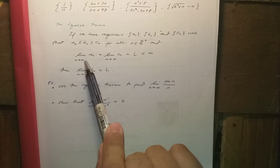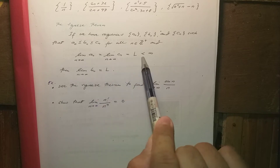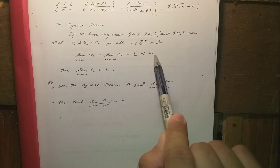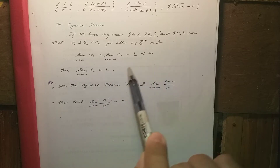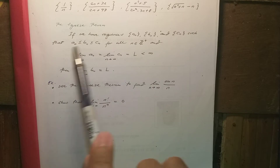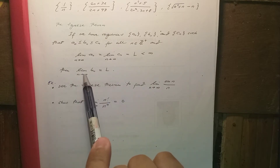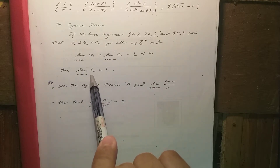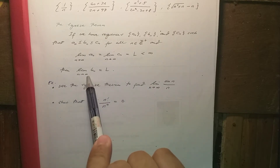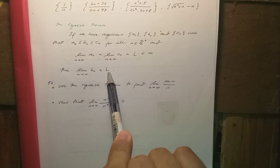then if they have the same finite limit L, we can conclude that the limit of b_n as n approaches infinity also equals L.